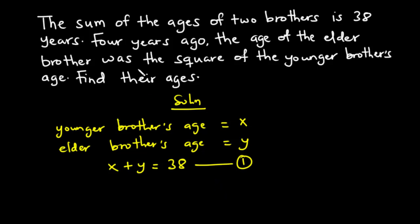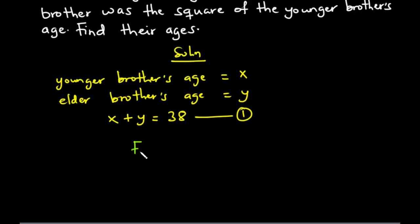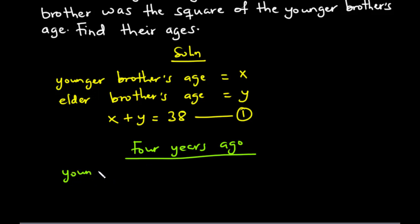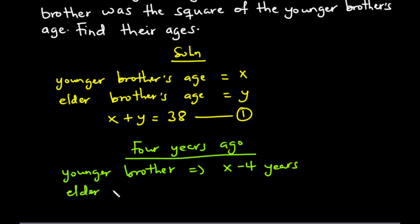From the second statement, four years ago the age of the elder brother was the square of the younger brother's age. So let's derive their ages four years ago. Four years ago, the younger brother was x minus four years, and the elder brother was y minus four years. Because of the phrase 'four years ago,' we subtract four from the current age. So the current ages are x and y, meaning four years ago they were x minus four and y minus four respectively.